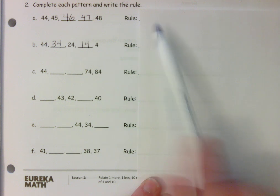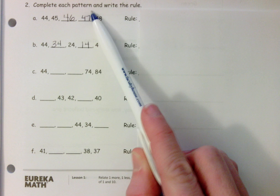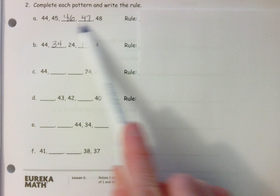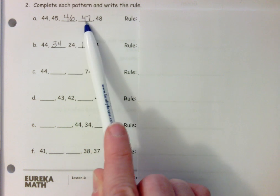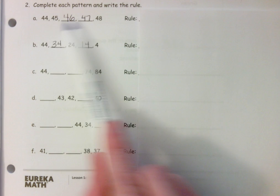I just want to highlight the work for pattern and rule here. Complete each pattern and write the rule. So we look for the pattern so that we can fill in the number that's missing, and then we think about what the rule is - how is the pattern working?